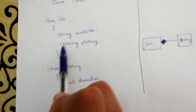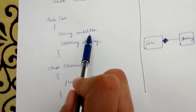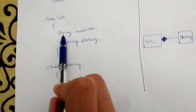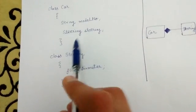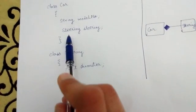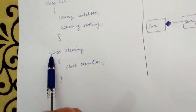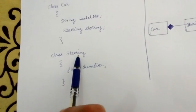Here is a Car class. It has a model number attribute which is of data type String, and a steering. So Car has a steering which is type Steering. Let's look at the Steering class.